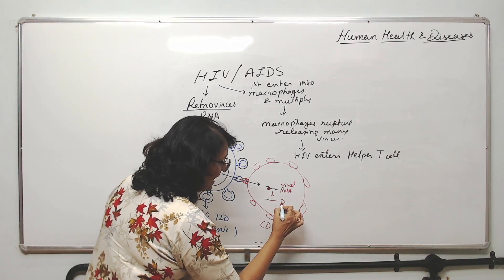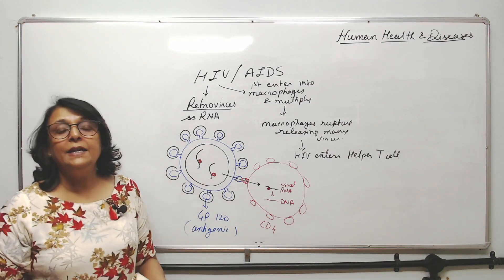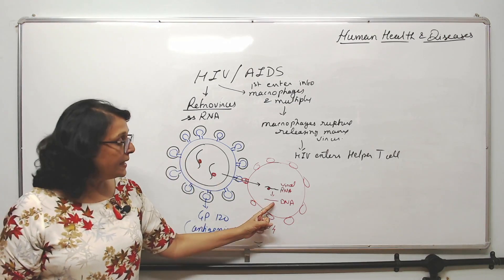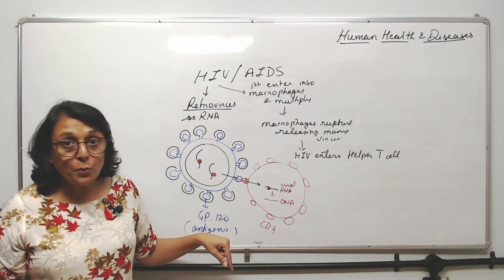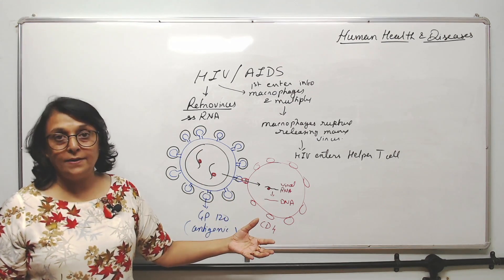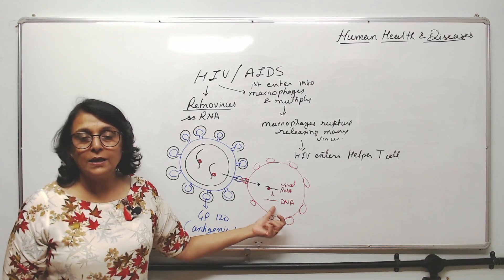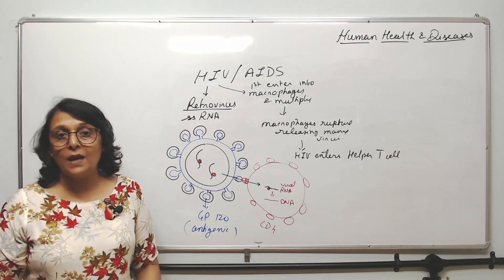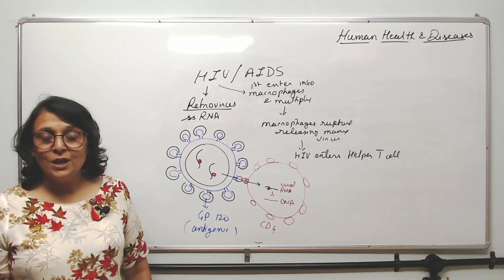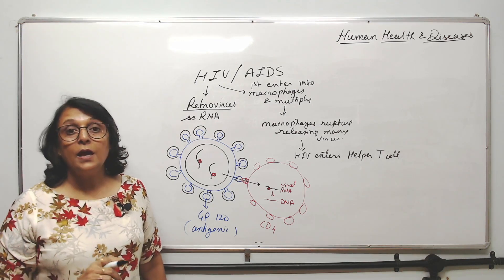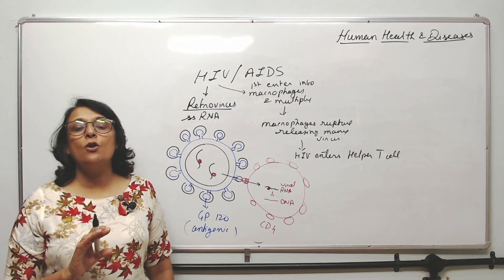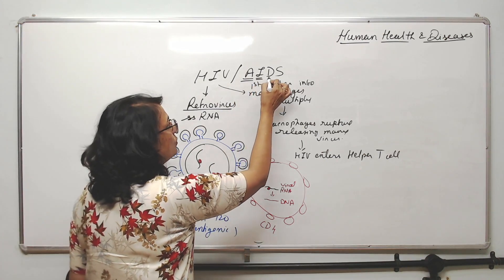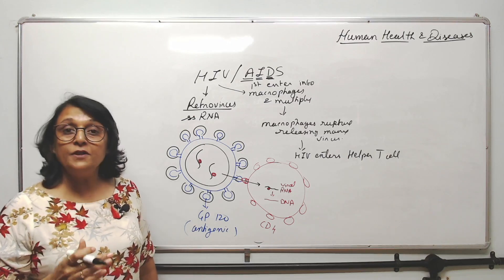Inside the helper cell, the viral RNA uses reverse transcriptase to make DNA. This DNA can either remain attached to the host cell's DNA and do nothing, or it can undergo transcription to form RNA and protein, and replicate inside the cell. If it replicates, a stage will come when the helper cell ruptures. With no helper cells, B cells cannot make antibodies, so the immune system is lost — and that is why it is called acquired immunodeficiency.